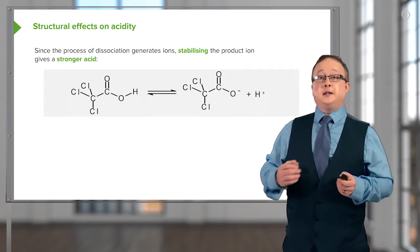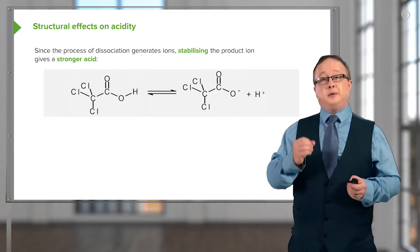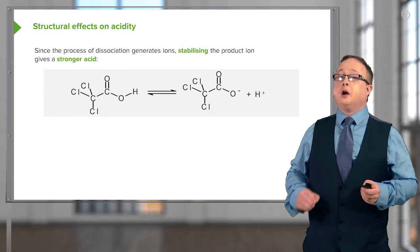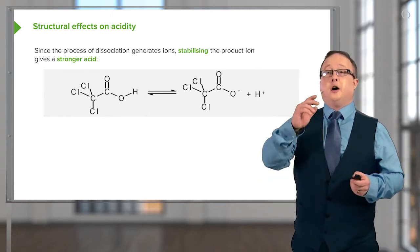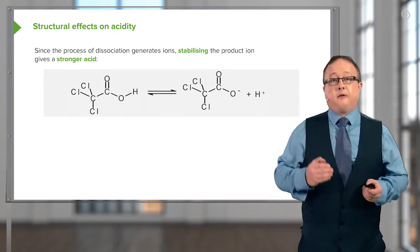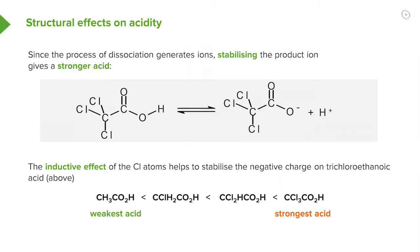By stabilizing this negative charge, you're essentially making this particular forward reaction more likely to occur, resulting in a greater concentration of H-plus, or protons. The inductive effect of chlorine — and many halogens would have the same effect, fluorine in particular — helps to stabilize the negative charge on trichloroethanoic acid. If we were to use dichloro or monochloroethanoic acid, we move from the strongest acid, which has the greatest amount of electronegative substituent, all the way down to the weakest acid, which lacks any electronegative substituent.